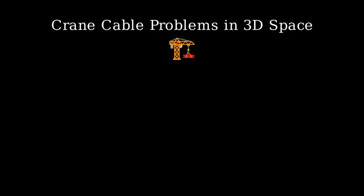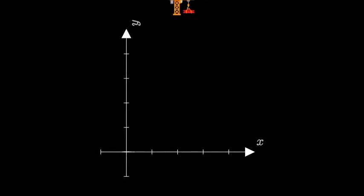For the first problem, let's visualize our crane in three-dimensional space. We have our X, Y, and Z axes. The cable starts at point A on the boom and extends to point B.